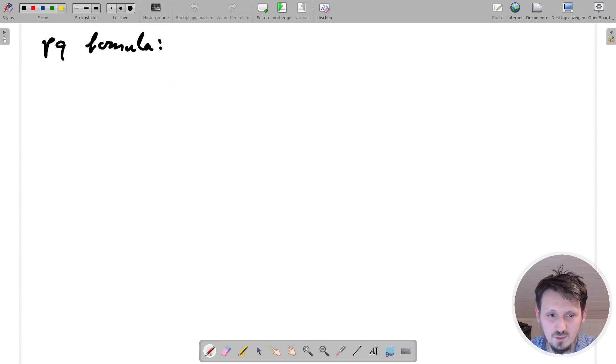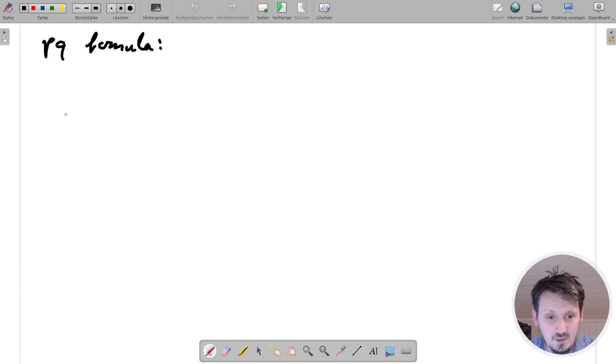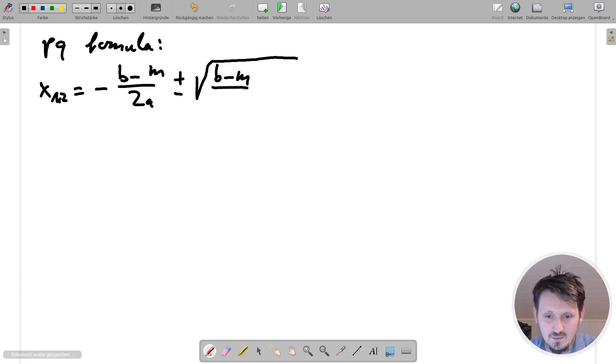Okay. So what now we can do on the next step, we can then write. I will directly give the solution now X, Y and two is equal to minus P, which means minus B minus M divided by two A plus minus. And then we can give here our square root B minus M divided by A for A squared because we have to write here P squared minus C minus N divided by A.